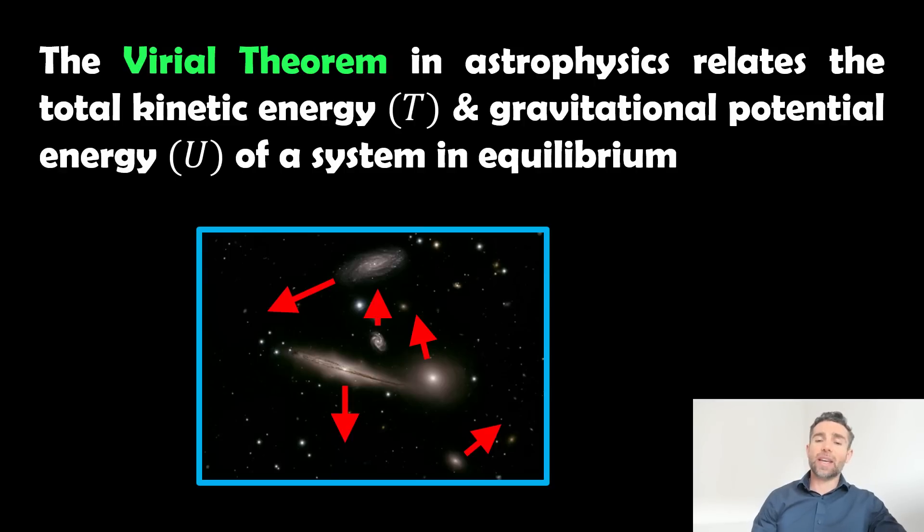So the example here is we've got a galaxy group or cluster, so we've got a few collections of different sorts of galaxies. They're all moving relative to one another and there's some gravitational potential energy associated with that. And if it's in equilibrium, we can use this theorem then to maybe work out the mass of the object or the mass of the cluster, the dark matter, that sort of thing.